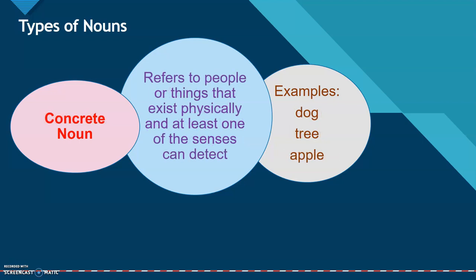Concrete noun. They refer to people or things that exist physically, and at least one of the senses can detect. For example: dog, tree, an apple.